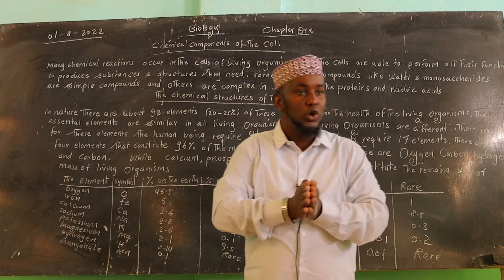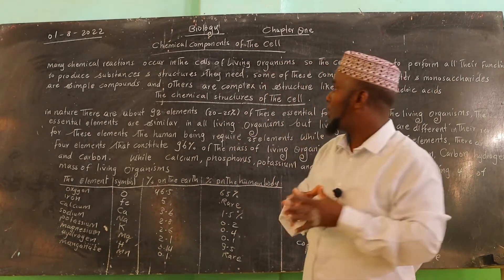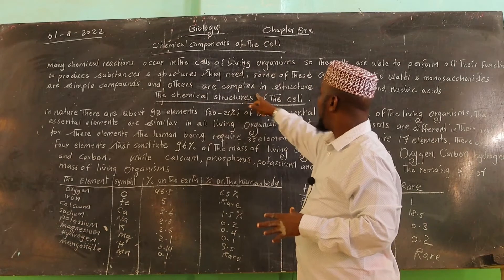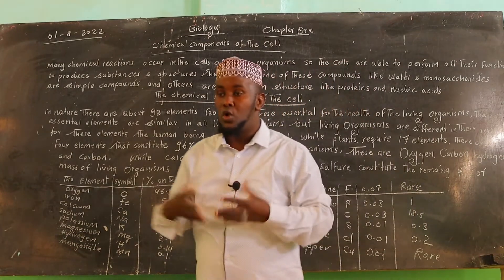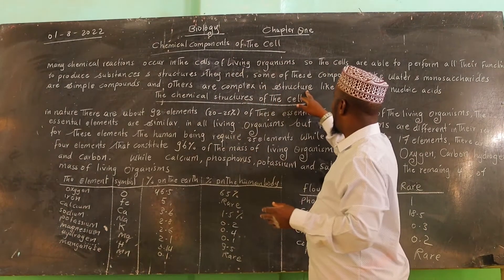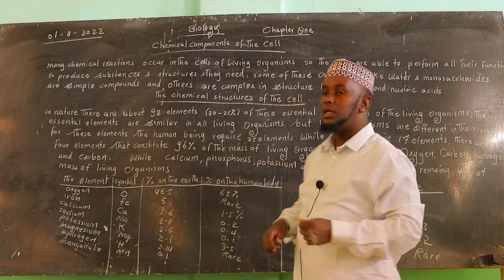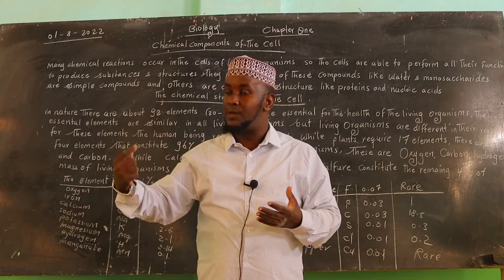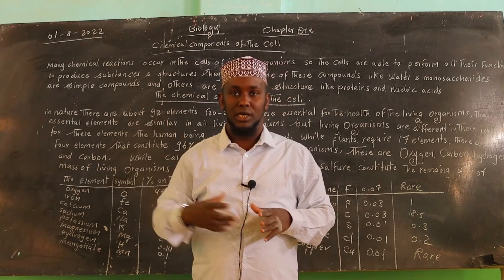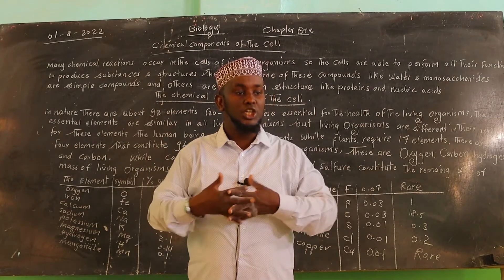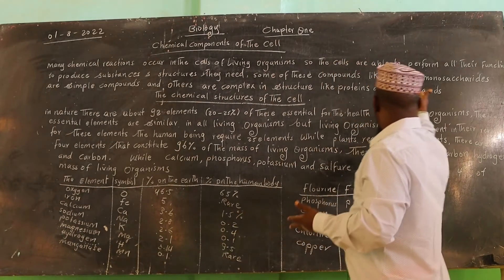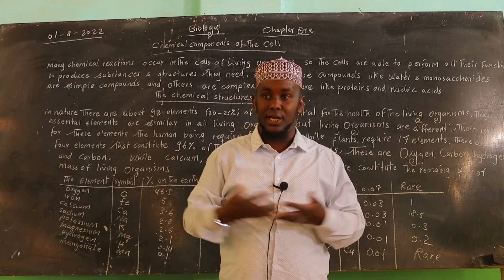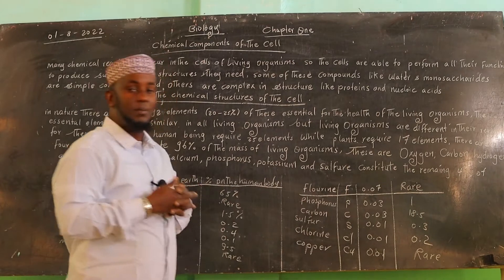The common elements in water are Hydrogen and Oxygen. The structure of the cell includes proteins, which are made of Amino Acids. Proteins are called Amino Acids in the body. There is also Nucleic Acid, or Nucleotides. DNA and RNA are the nucleic acids found in the body.